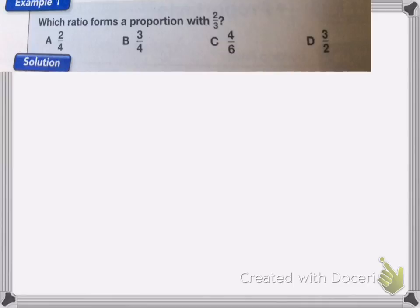In this problem, we need to find which of these ratios forms a proportion with two-thirds. That means it needs to be equal to two-thirds. We're going to look and see which of these other fractions equals two-thirds.